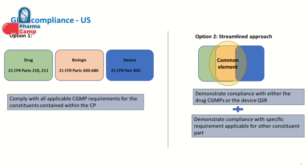This was a bit complex — why follow all the individual requirements for all components when some elements are common across these regulations? To address this, FDA introduced the streamlined approach in 2018. The streamlined approach is a new framework for GMP compliance for combination products, intended to simplify the GMP requirements and reduce the regulatory burden for manufacturers. Since these requirements have common elements, you can show compliance to those common elements and then fulfill the specific requirements of the other component, so you no longer need to show compliance with both drug and device GMP requirements separately.